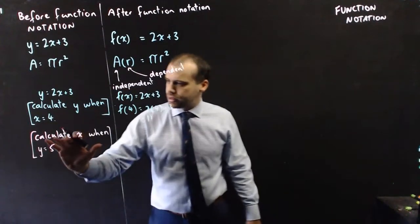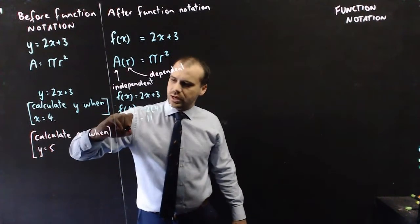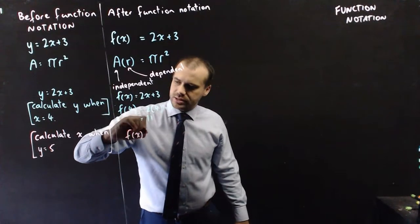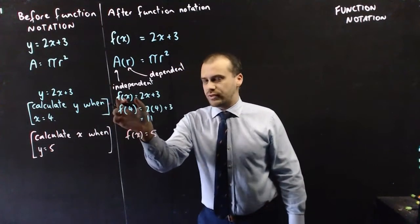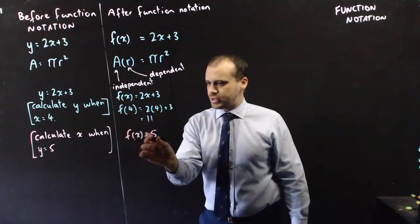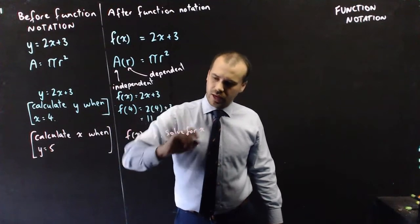Now if you wanted to go the other way, calculate x when you know what y is, here you can say f of x equals 5, so f of x is like our y value, so f of x equals 5. Solve for x.